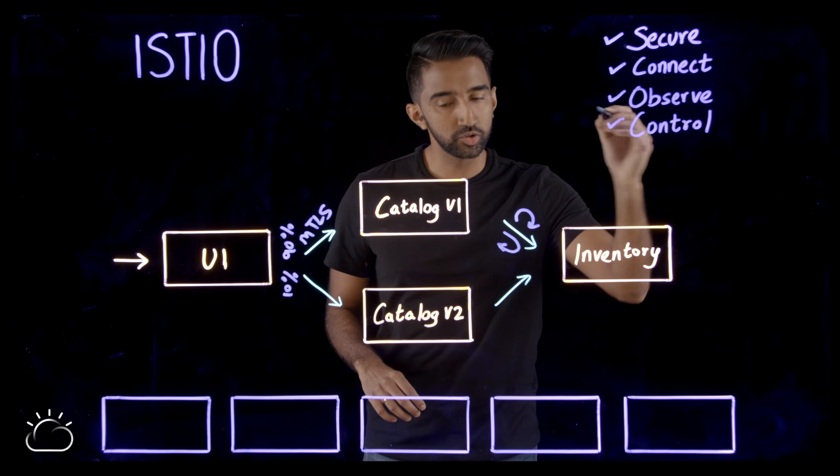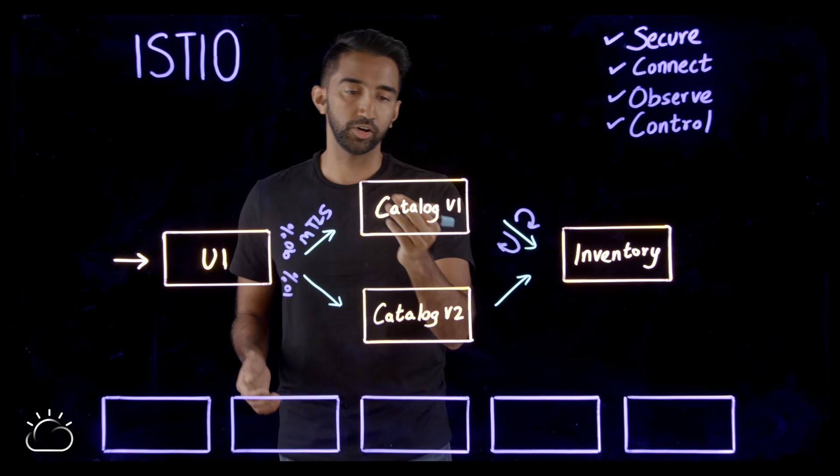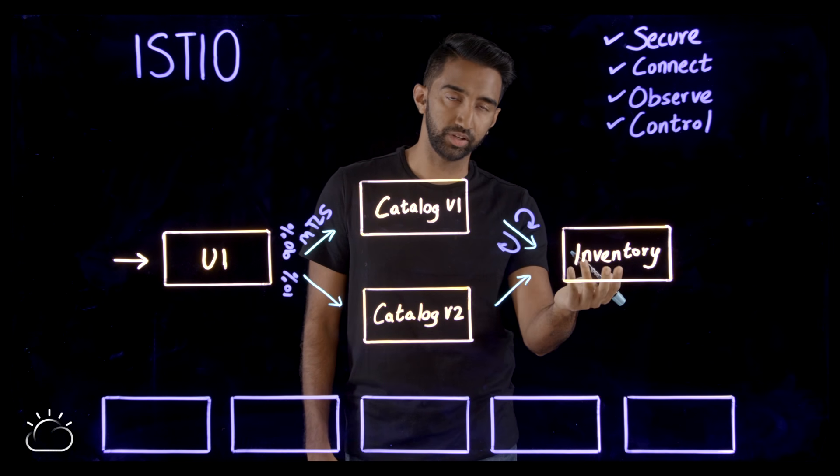Fourth, I want to control who has access to talk to what. In this example, UI is allowed to talk to catalog and catalog is allowed to talk to inventory.